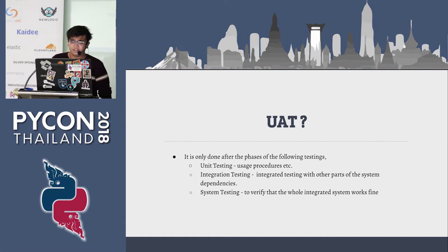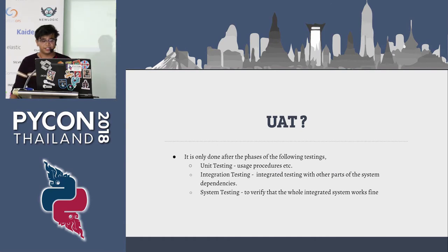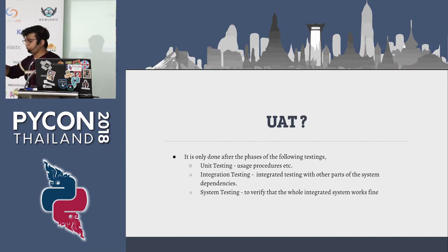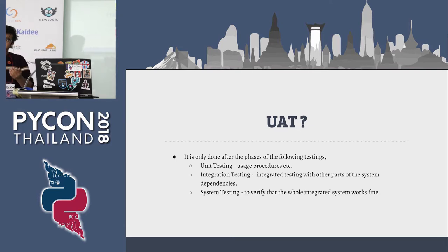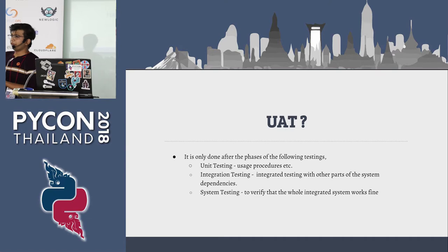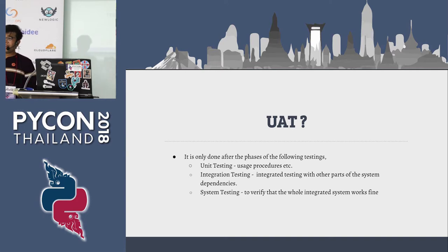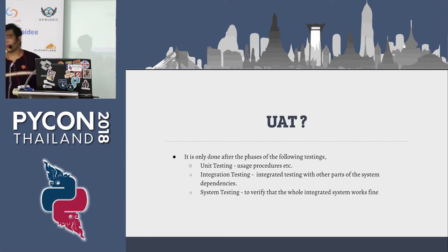Acceptance testing is only done after the phases of unit testing, integration testing, and system testing — it's the final step before it reaches the customer. If something fails, you could deliver something very buggy or broken. If it breaks, you have to go back and fix it, and it will ruin your Friday night.